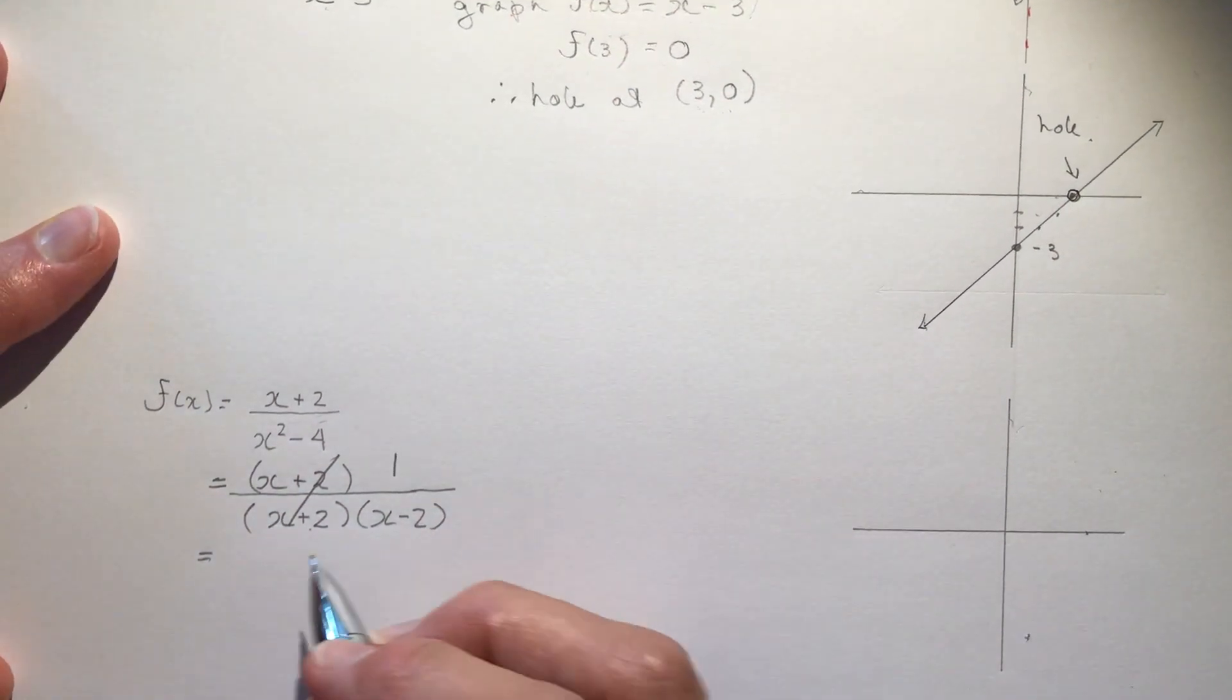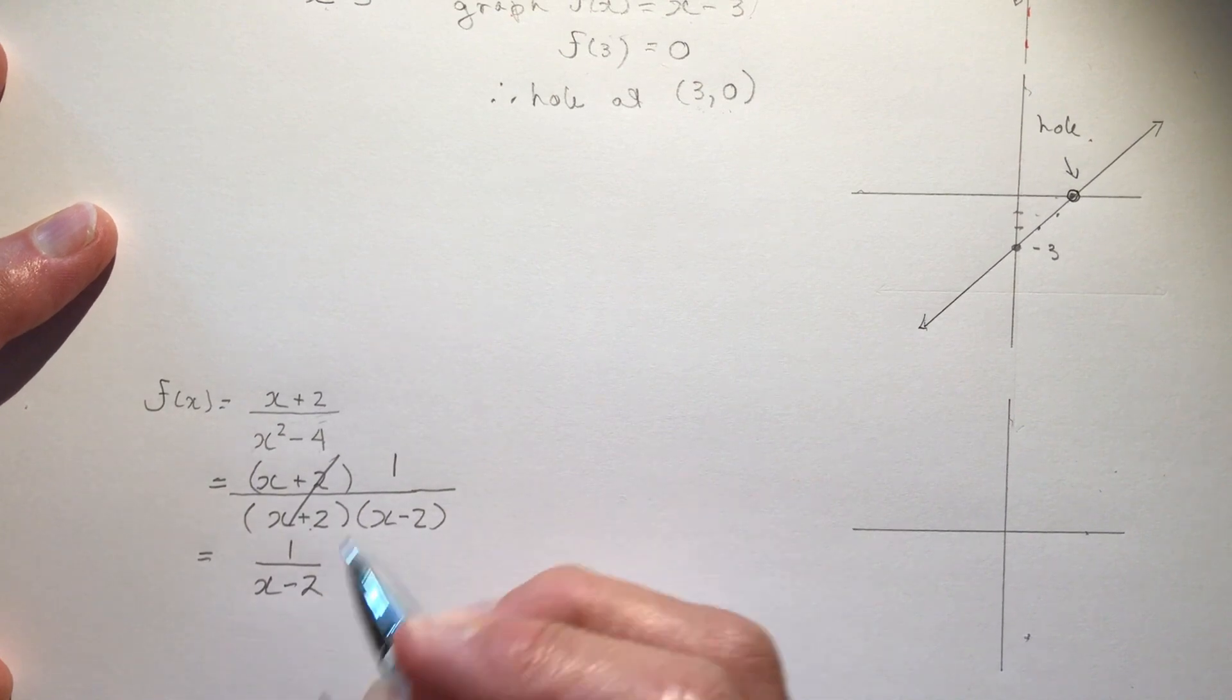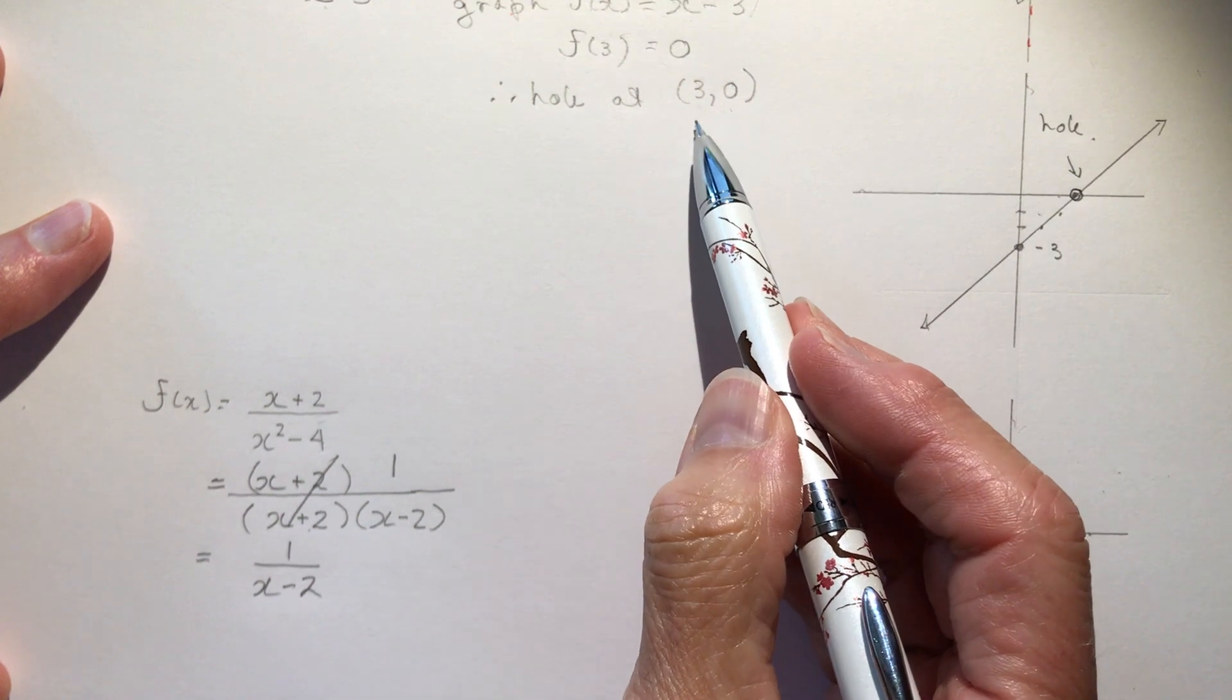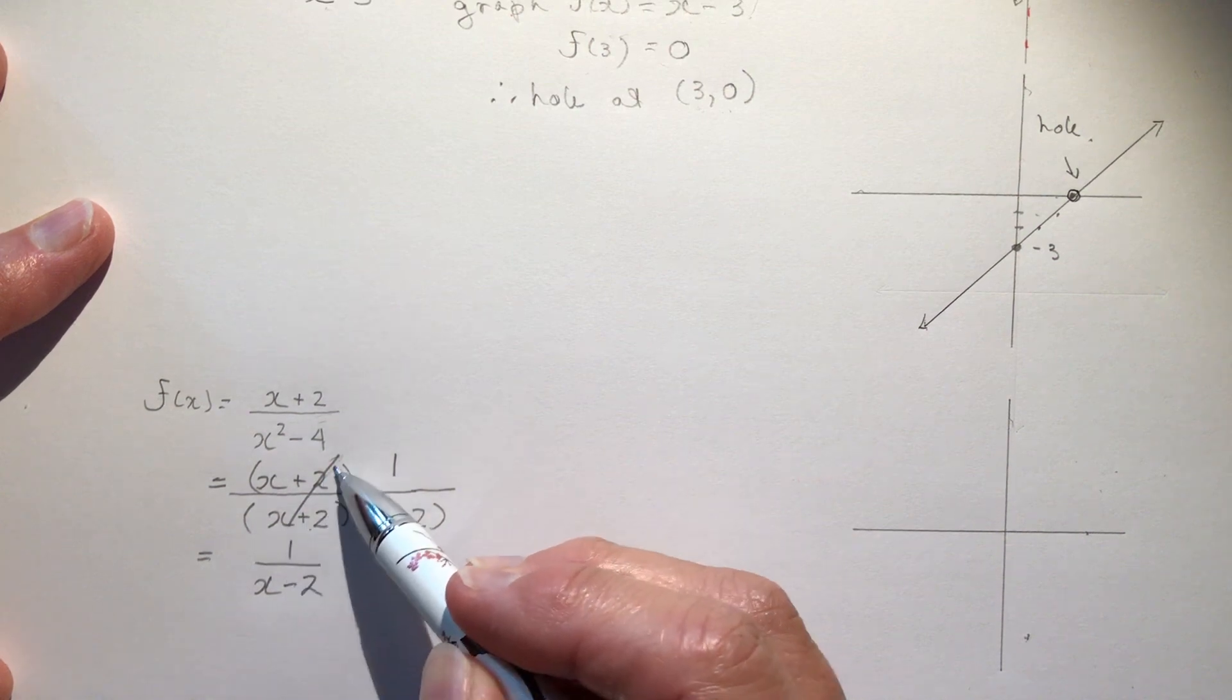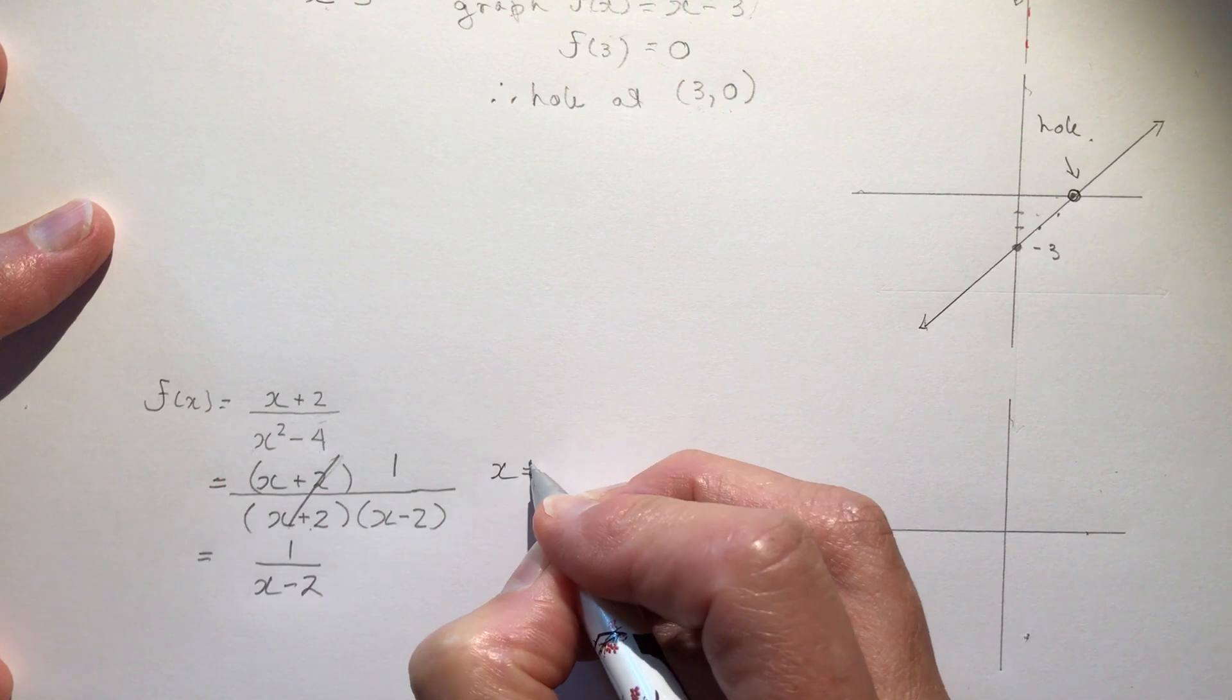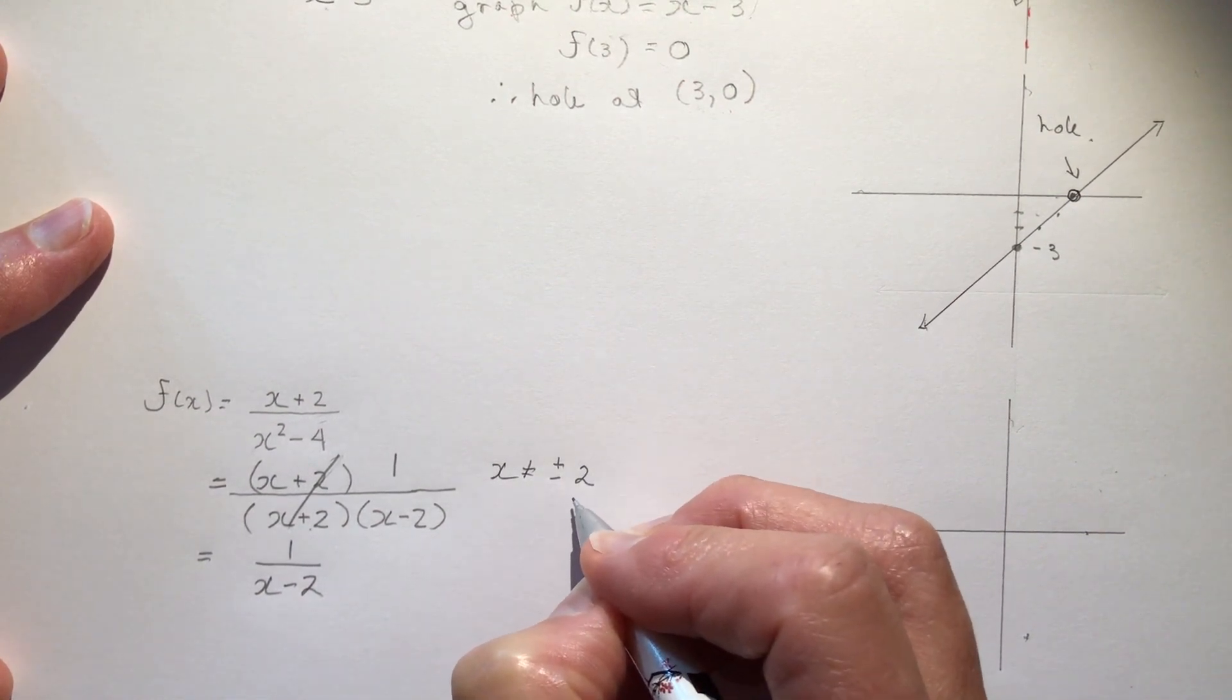So what does that look like? So these are the only possibilities, you know, you either end up with a hole in the graph or you end up with something like this. So I cancelled this one out.